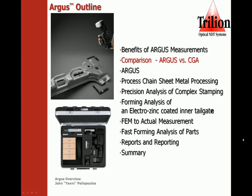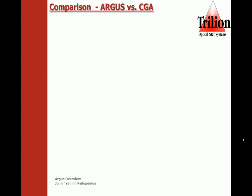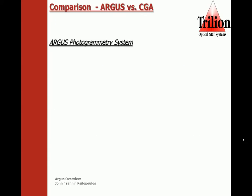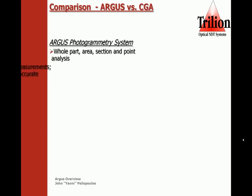Now we're going to do a quick comparison of the Argus measurements versus traditional circle grid analysis. The Argus photogrammetry system is a whole part, area, section, and point analysis.